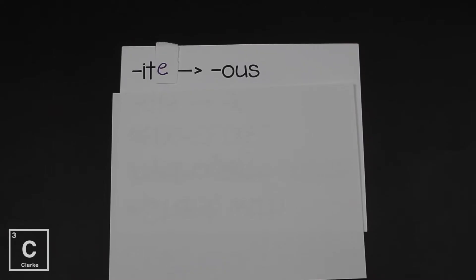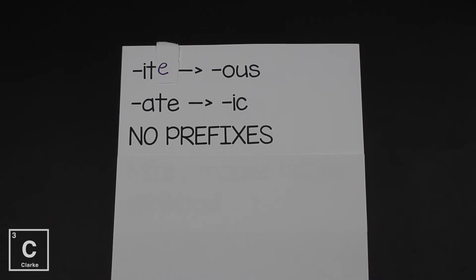So if our oxy acid contains a polyatomic ion that ends in ite, we're going to change that ending to ous, O-U-S. And if our oxy acid has a polyatomic ion that ends in ate, we're going to change the ending to ic. Even though acids are molecular compounds, they are held together with covalent bonds, we don't use prefixes because like I said, acids are a little bit different and they kind of act like ionic compounds. And ionic compounds don't use prefixes, neither do acids.